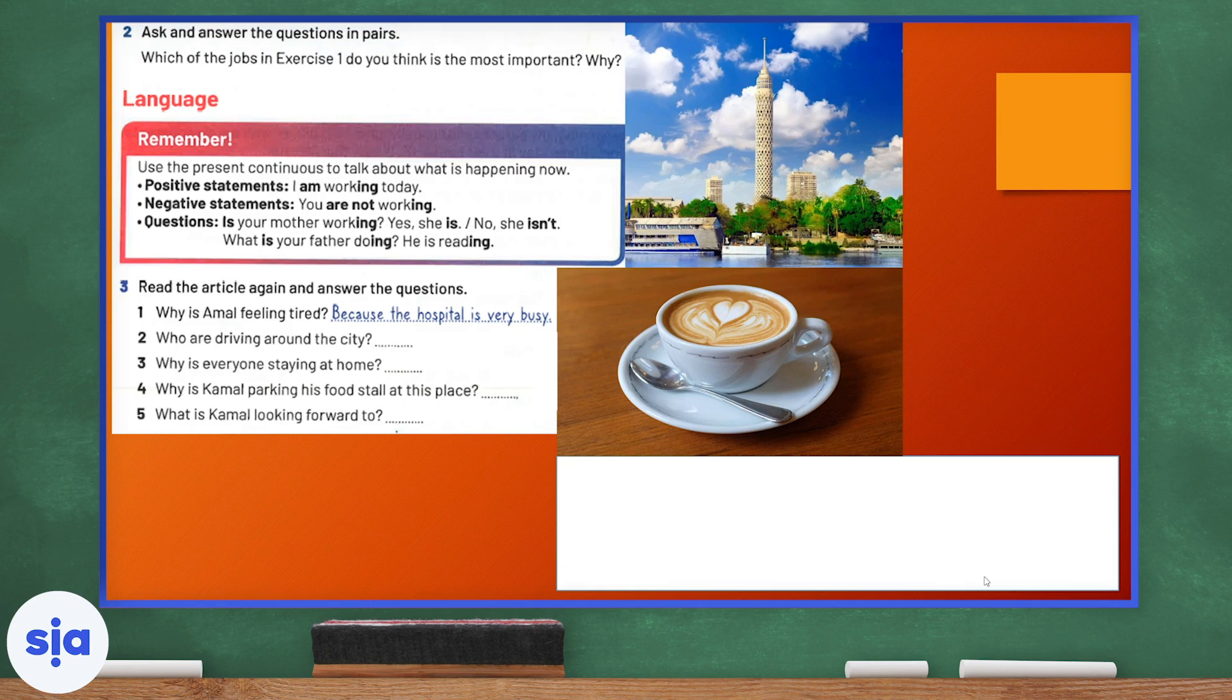Now, I want you to ask and answer questions in pairs. Which of the jobs in exercise one do you think is the most important and why? Remember, use the present continuous to talk about what is happening now. So, if I'm showing something that I'm doing right now, I will say I'm working today. If I'm showing the negative of something that is not happening now, I will say you are not working today.